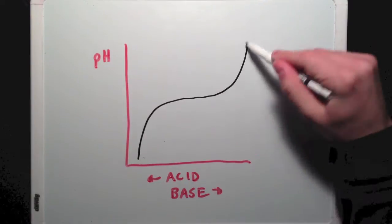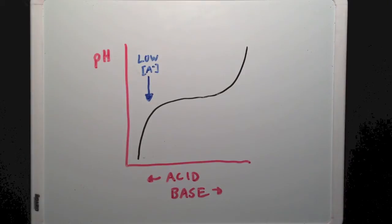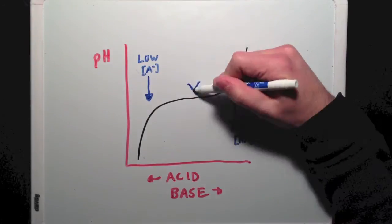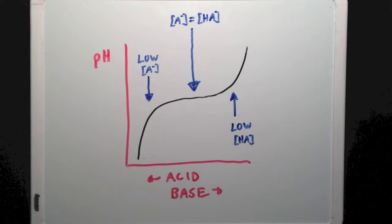Now it's important to recognize that buffers cannot prevent changes in pH forever. As incoming acid lowers the pH of a solution, the amount of available conjugate base decreases. And as pH increases, the amount of available conjugate acid decreases. Therefore, a buffer is most effective in the middle of its range, when the concentration of conjugate acid and base are equal.